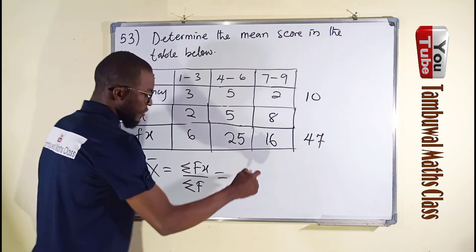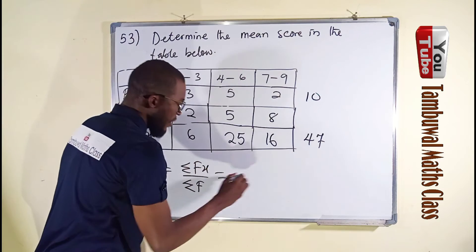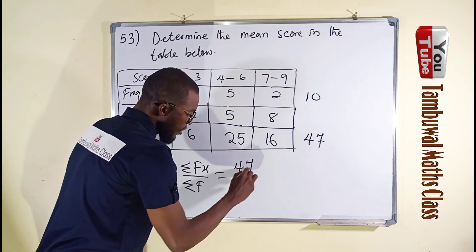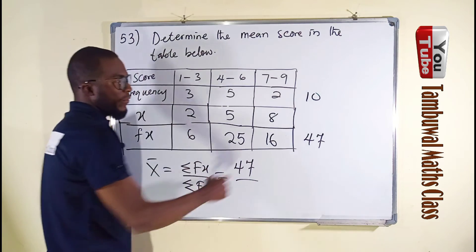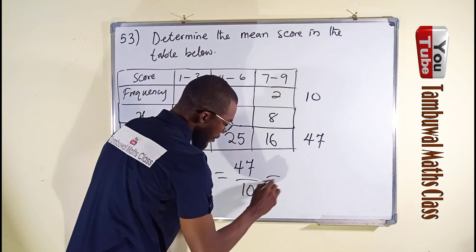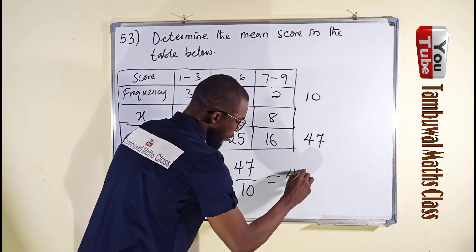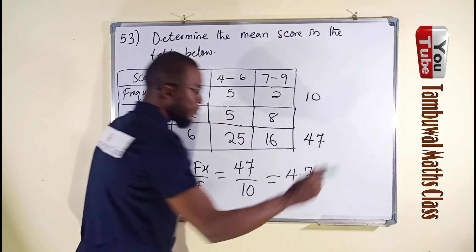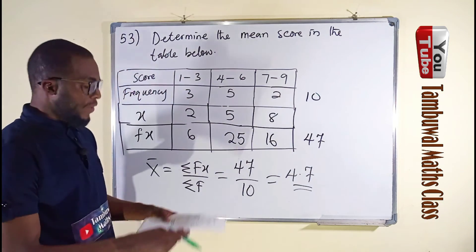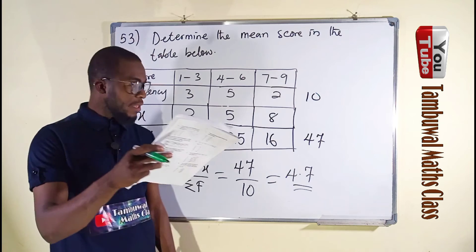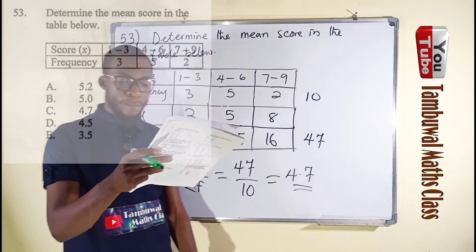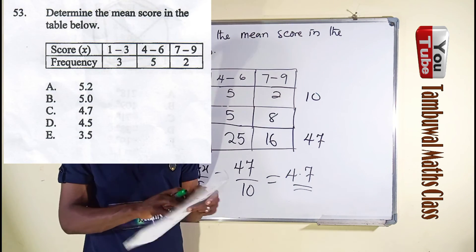Therefore, to substitute here, summation of fx you can see it here as 47. Summation of f you can see it here as 10. This is equal to 4.7 as our mean or average. That's what we are asked to find, and it is option C here.